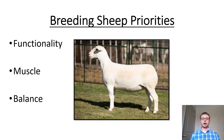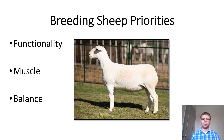Even though the breeding sheep industry is highly segmented, it's still important to keep in mind the priorities that apply to all breeding sheep regardless of which part of the industry they're involved in. Those priorities are: functionality first, muscle second, and balance third. These are the same priorities we discussed for breeding cattle and should start to become second nature as you evaluate animals.